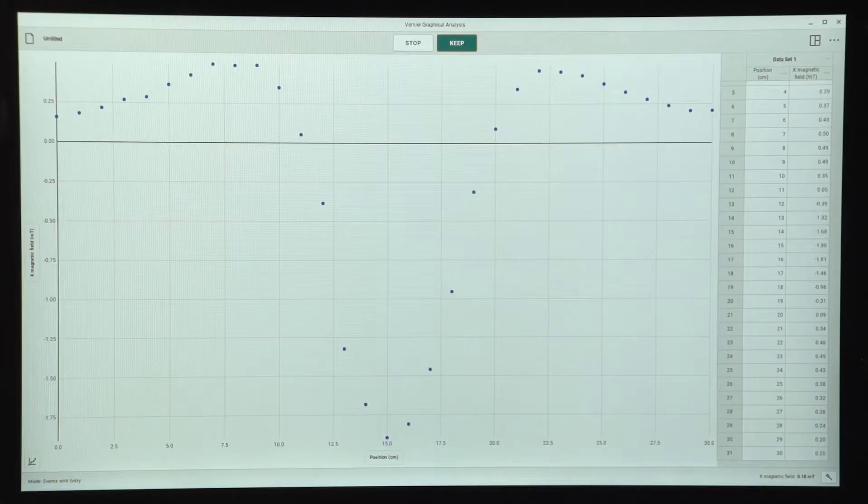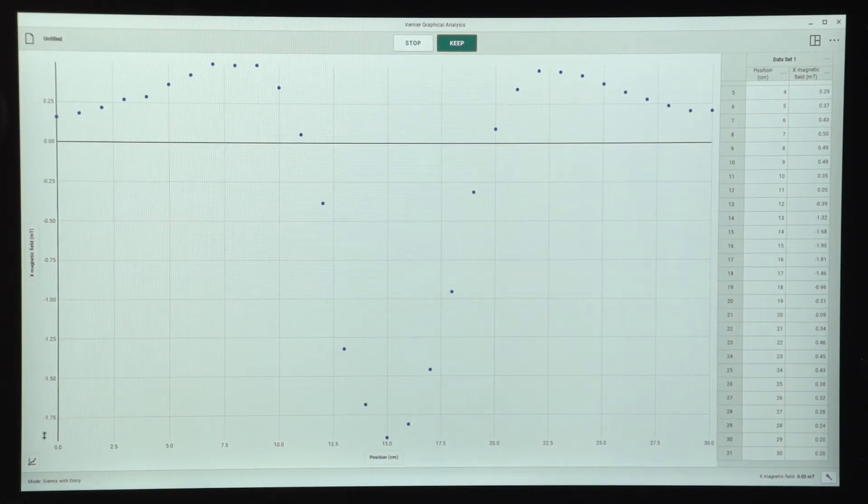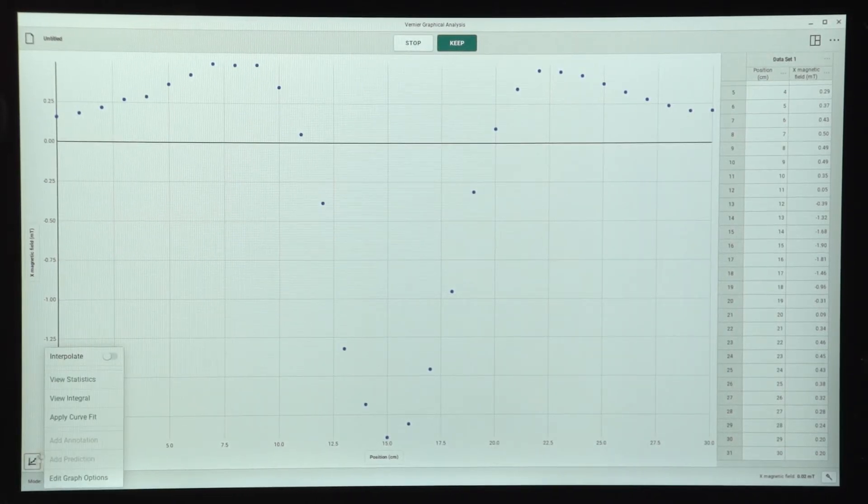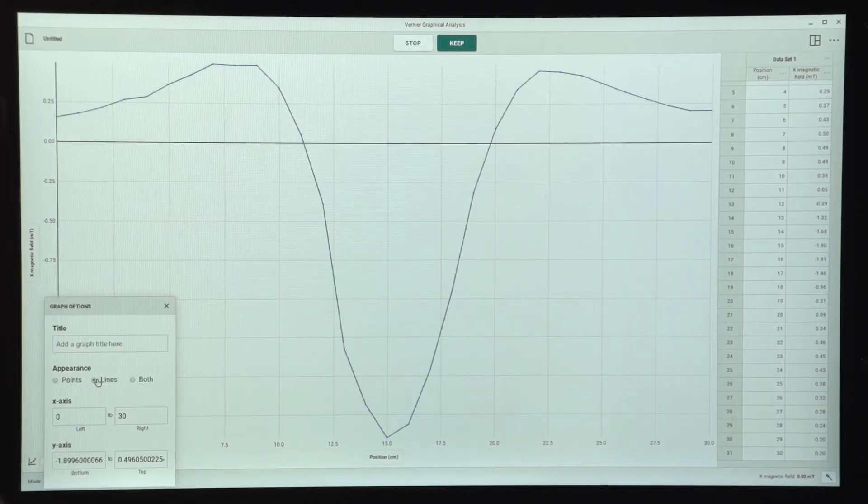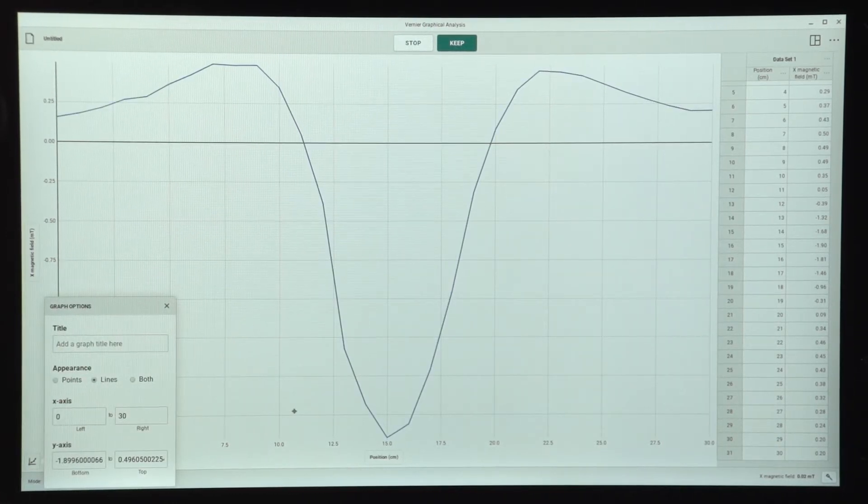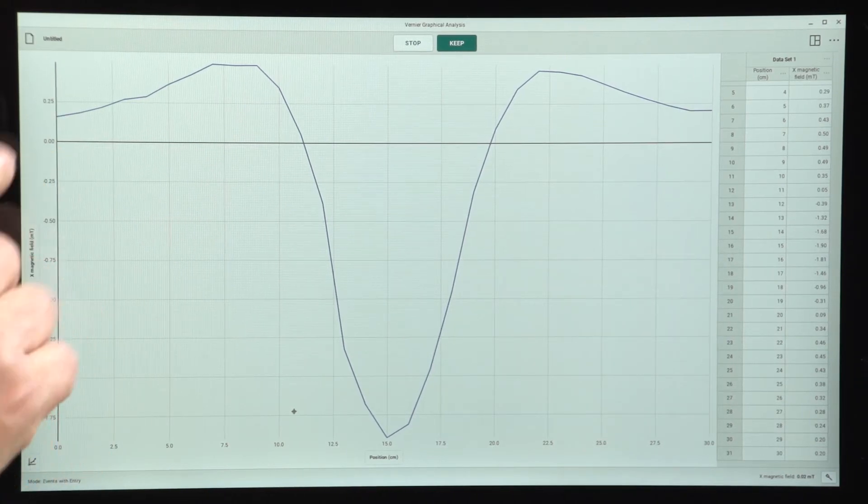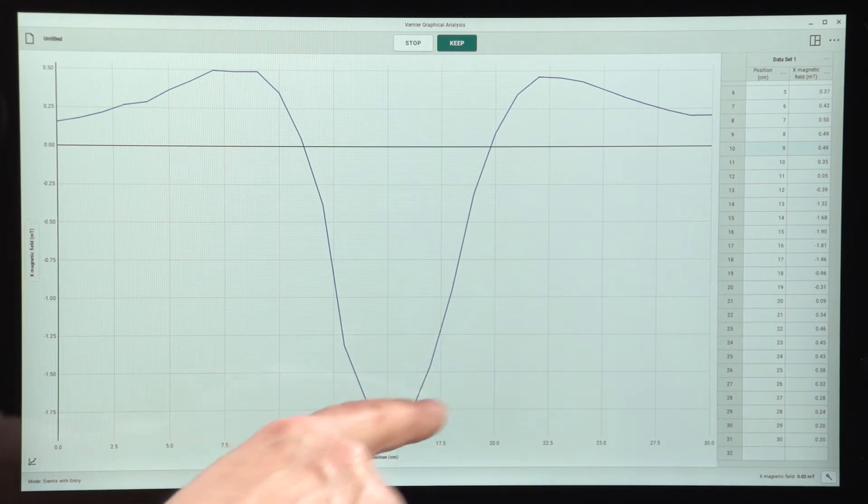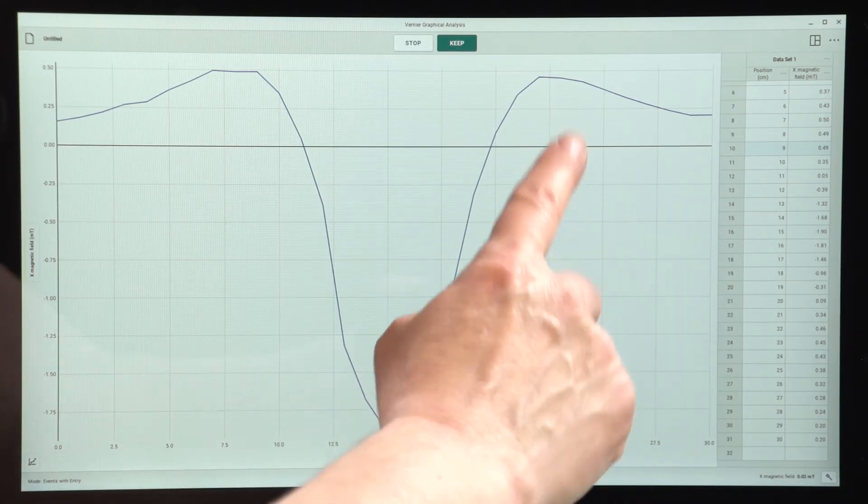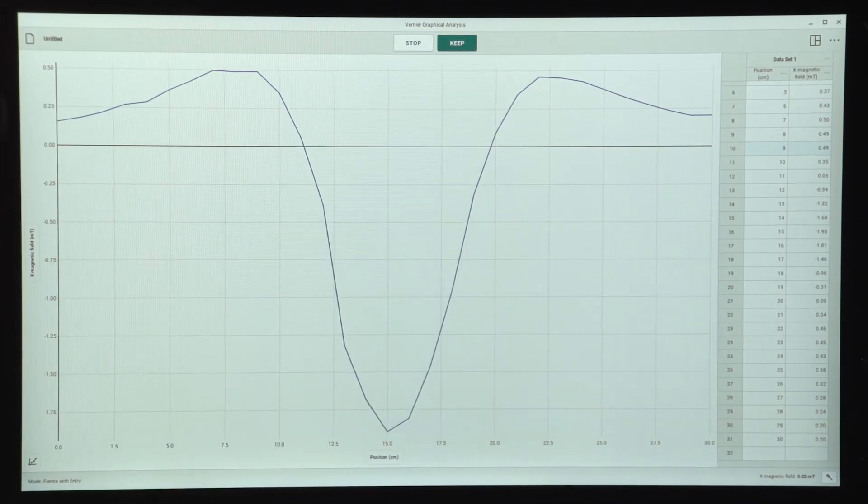Let's take a look at the graph. I am going to change the appearance of the graph to make it a little bit easier by adding lines to the graph. So now you can see that the shape of the graph is positive for the first bit, is negative in the middle, and then is positive at the end.